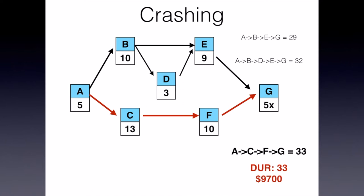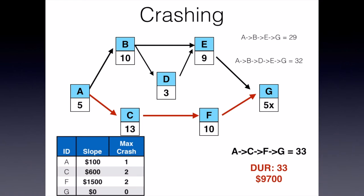Now I want to look at those tasks on this critical path — A, C, F, and G — and ask which one would be the cheapest to reduce in time. I can't look at G, but I can look at A, C, and F. It looks like A would be the one I'd want to crash here. So if I take that from 5 days down to 4 days, it will add $100 to my overall project cost. So now I know that at a duration of 32 days, it's going to cost $9,800 to get this project completed. At each step along the way though, I need to ask: has my critical path changed?